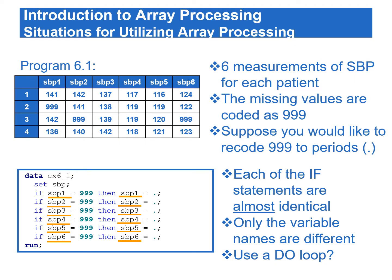This example illustrates a situation for utilizing array processing. The dataset SBP contains six measurements of systolic blood pressure. The missing values are coded as 999. Suppose that we would like to recode 999 to the standard numeric missing value. We can write the code like the one in Program 6.1.